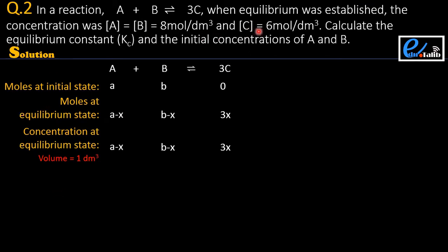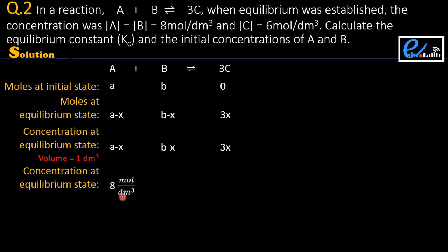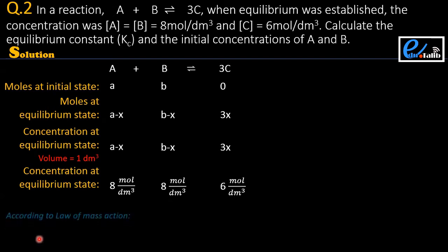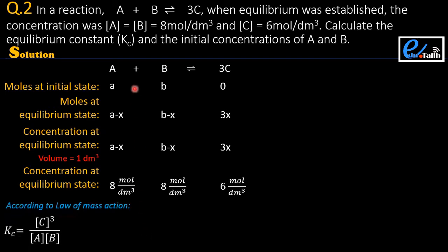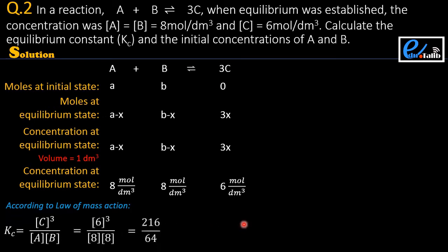The equilibrium concentrations are given: A is 8 moles per dm³, B is 8 moles per dm³, and C is 6 moles per dm³. With these known values, we apply the formula according to the law of mass action to calculate Kc. The value of Kc is 3.38 moles per dm³.